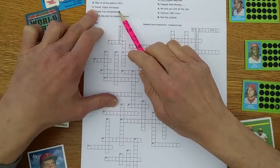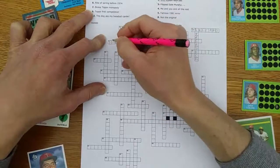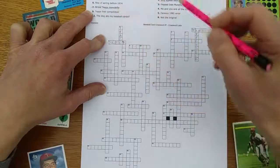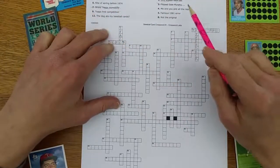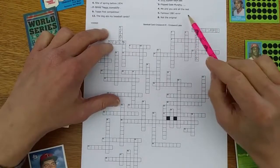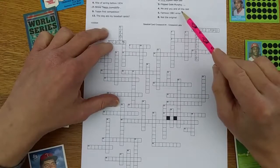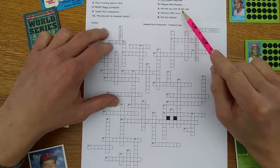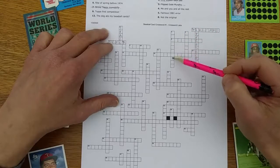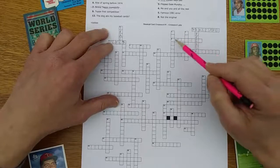Seven across: Broke Topps Monopoly. That would be Fleer, who filed their antitrust lawsuit in 1975 and won the thing for a dollar settlement in 1980. But they also got the right to produce baseball cards, and that was the key for all of us I think. Me and you and all the rest - what are we? Collectors. C-O-L-L-E-C-T-O-R-S. I think that would fit.